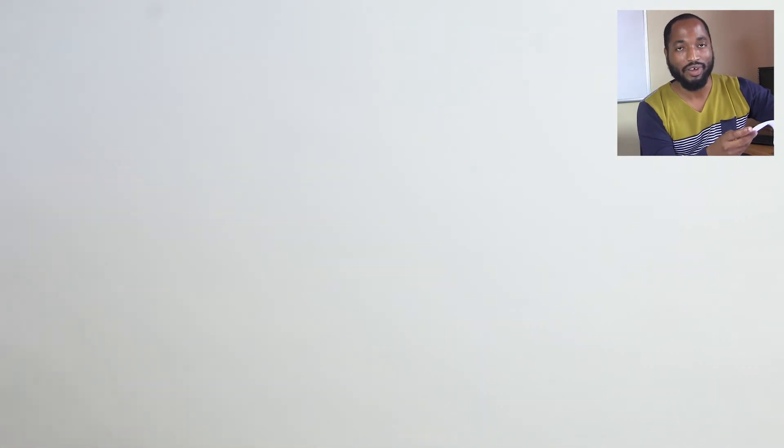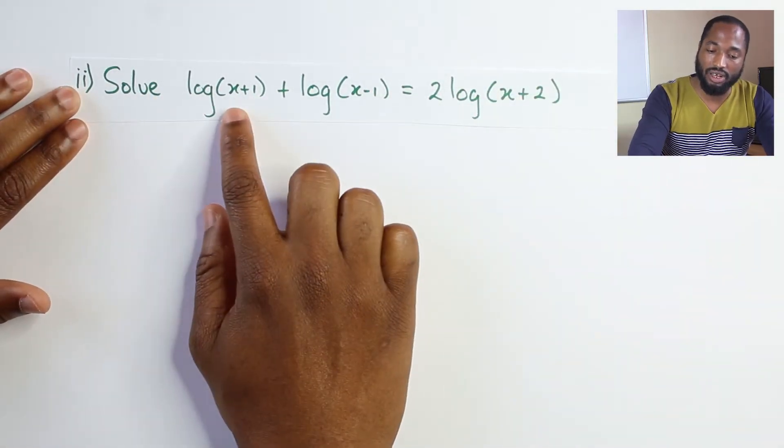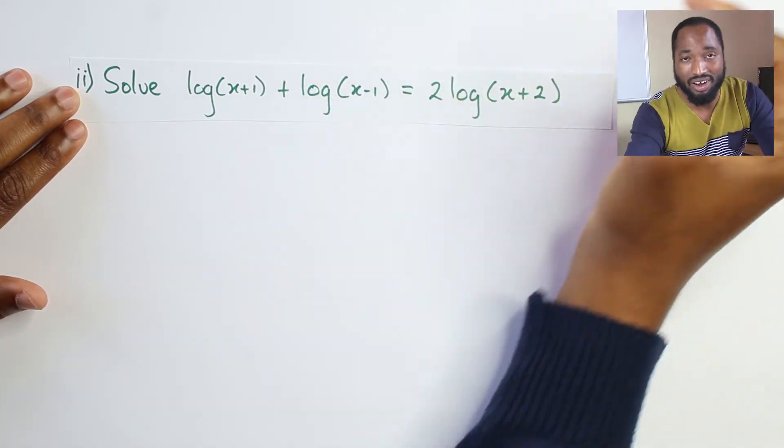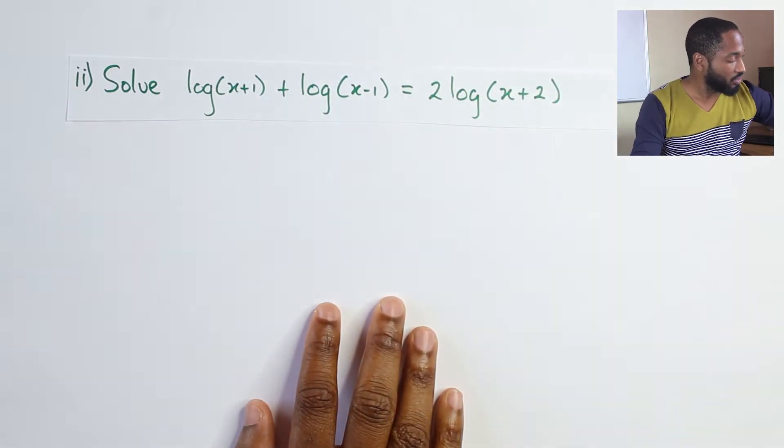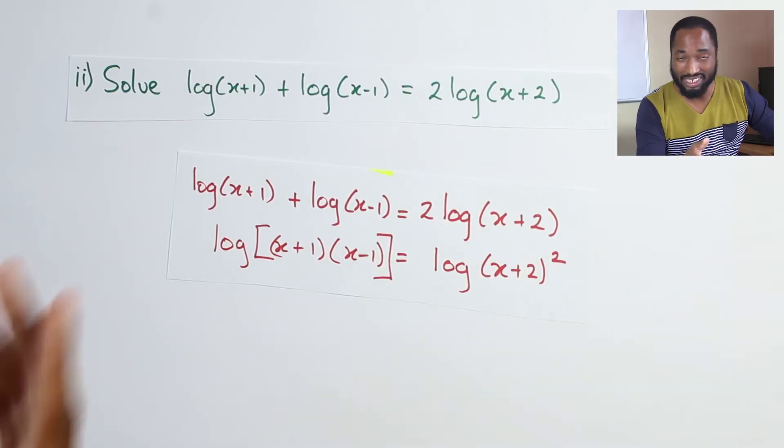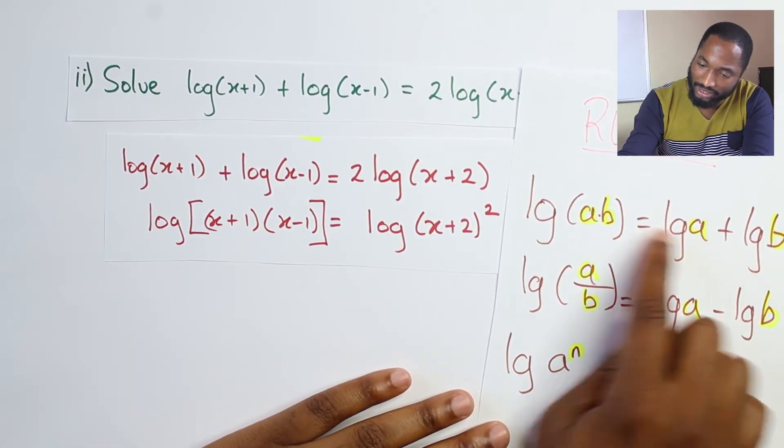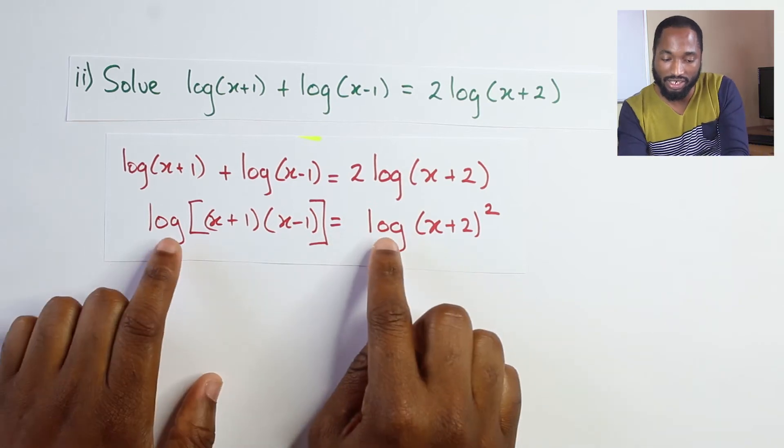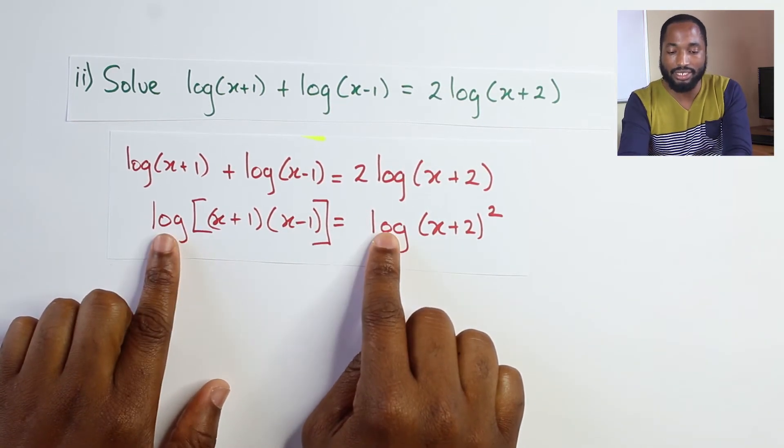This is going to be the second part: solve log(x+1) + log(x-1) = 2log(x+2). When you see 'solve', you need to actually get a value for x. First thing you're going to do - this is the second part - log(a) + log(b), you can bring that down into multiplying. Why am I doing that? Because I want to just get log one time on both sides. When I get that one time on both sides, I can use this trick: removing logs.